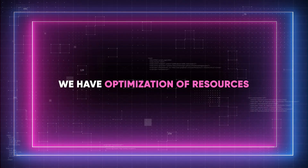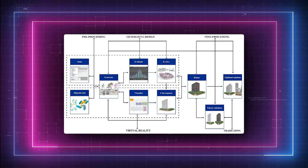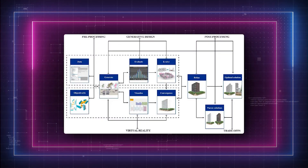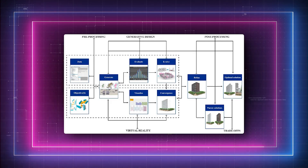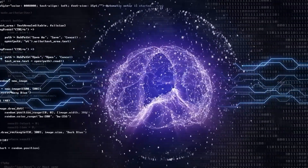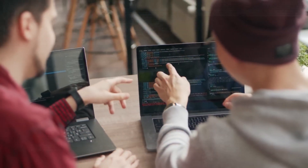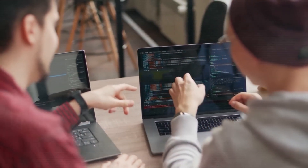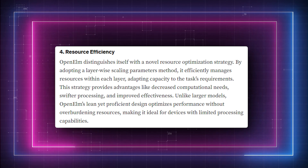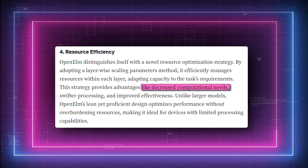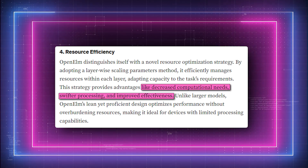At number four, we have optimization of resources. By using a layer-wise scaling parameters technique, Open ELM's unique resource optimization approach represents a substantial departure from conventional methods that rely on increased model size to boost performance. Depending on the particular requirements of the job at hand, Open ELM can modify its capacity to optimize resource use within each layer. By balancing the model's capacity and complexity, this innovative approach maintains high levels of accuracy and precision while offering decreased computational requirements, faster processing, and better efficiency.